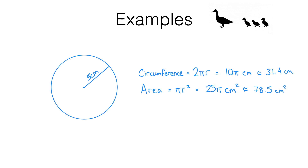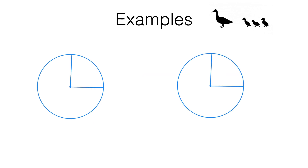If you're not sure about any of these, go back to topics G17b and G17c. The most important skill we need for this topic is to be able to identify what fraction of a circle we've got given the angle. Let me give you a couple of examples.